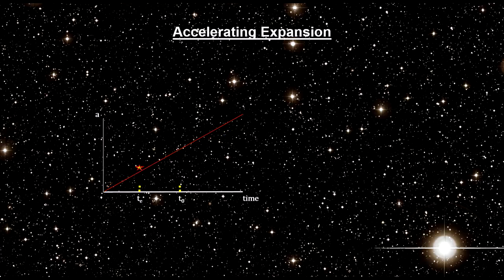By the same token, if the expansion is speeding up, the universe was expanding more slowly in the past than it is today, which means it took a longer time to expand from its size at light emission time to its present size compared to a non-accelerating universe. This results in larger light travel time, larger distance and fainter supernova.